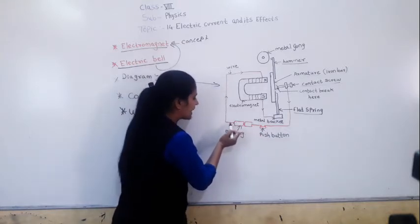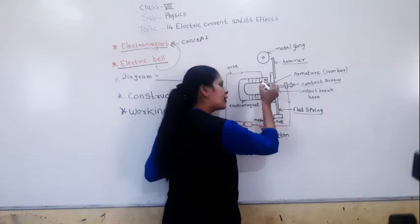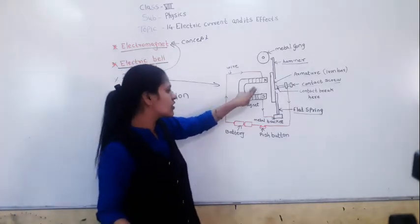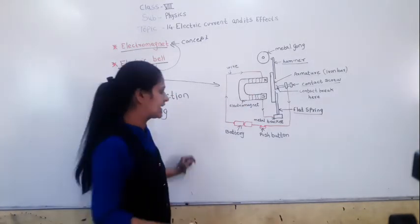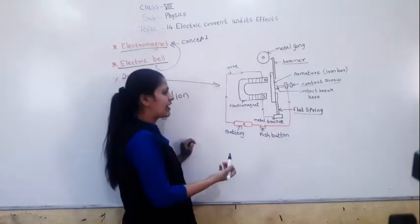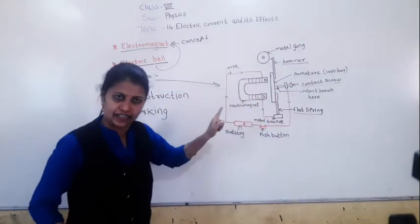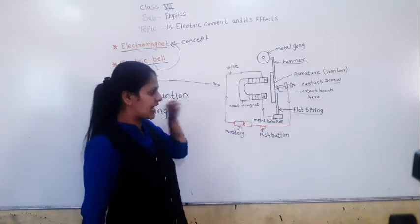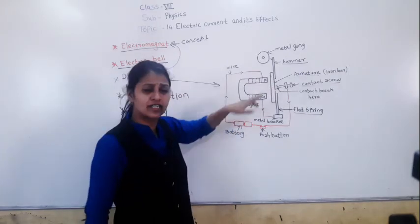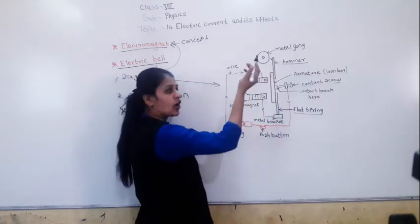As soon as the button is pressed, the electric current starts to flow from the battery. This coil becomes magnetized and starts to behave like a magnet. As it behaves like a magnet, the iron bar — the armature — gets attracted towards the U-shaped magnet and comes close to it.